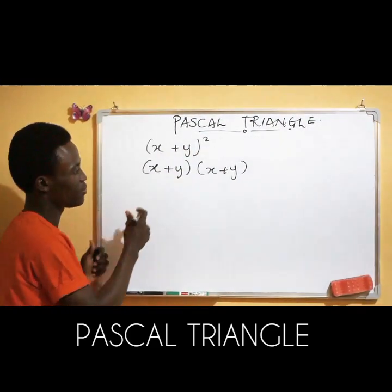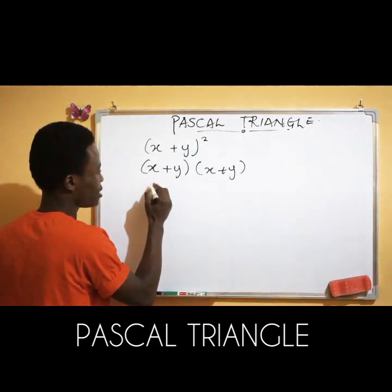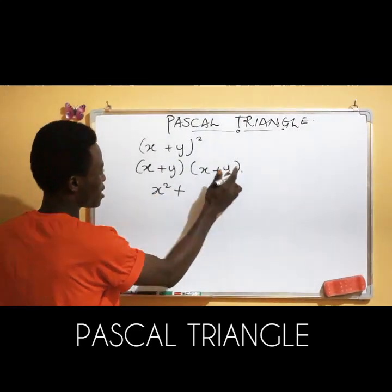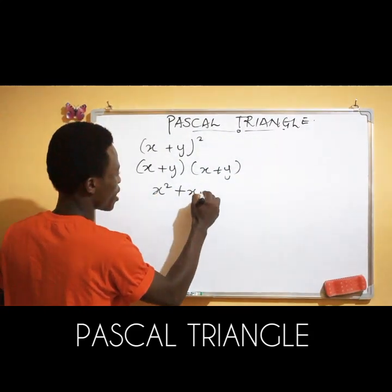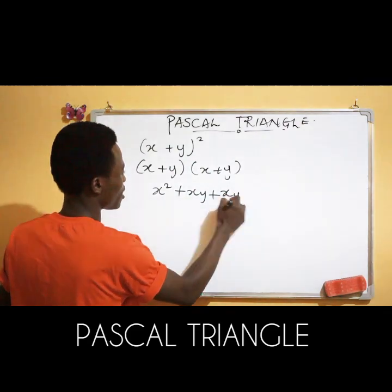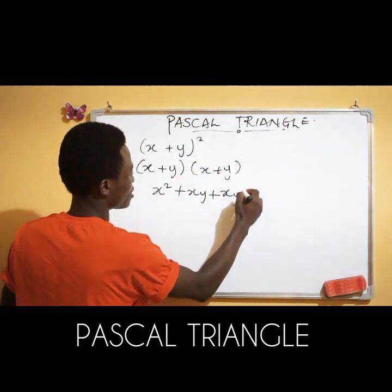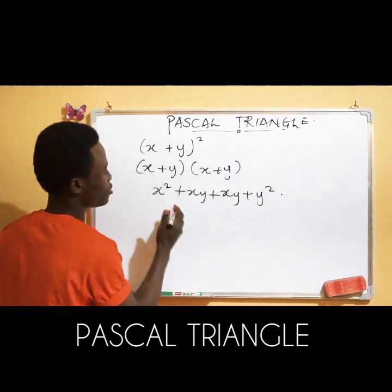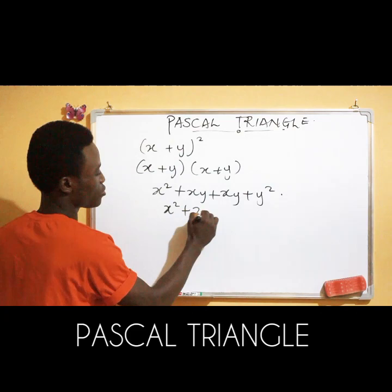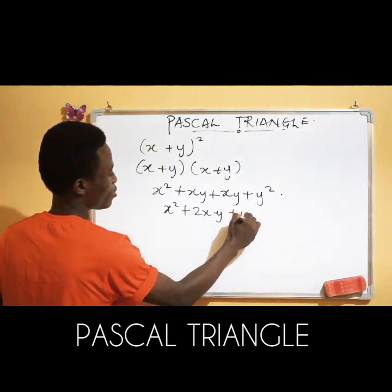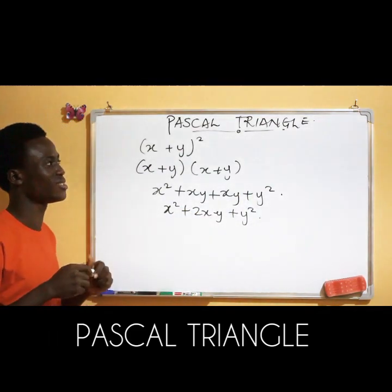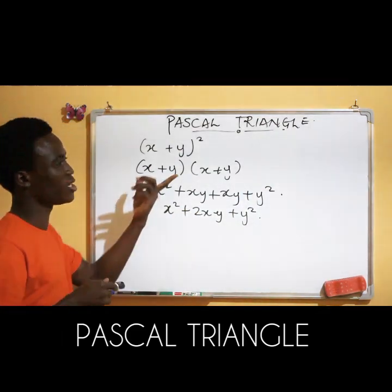From there you can see: x times x gives you x squared, plus x times y, plus y times x, plus y times y gives y squared. So here you have x squared plus 2xy plus y squared. This is just the basic knowledge of algebra.